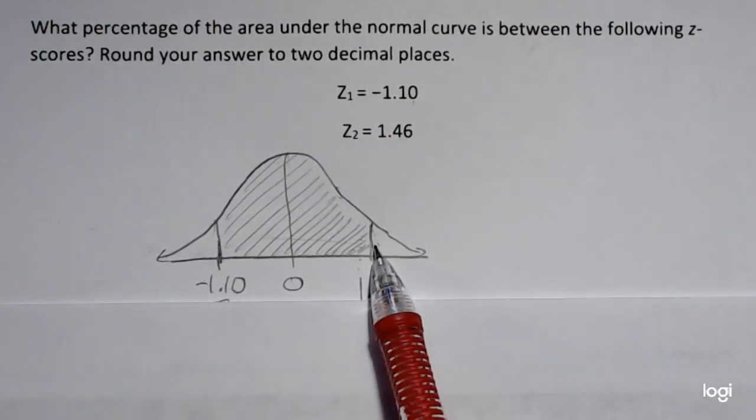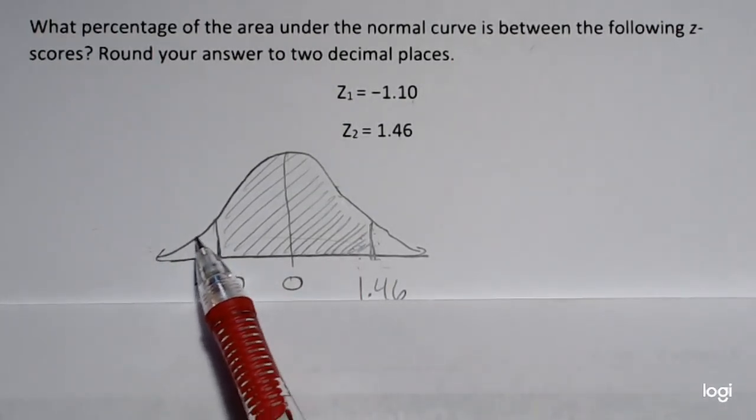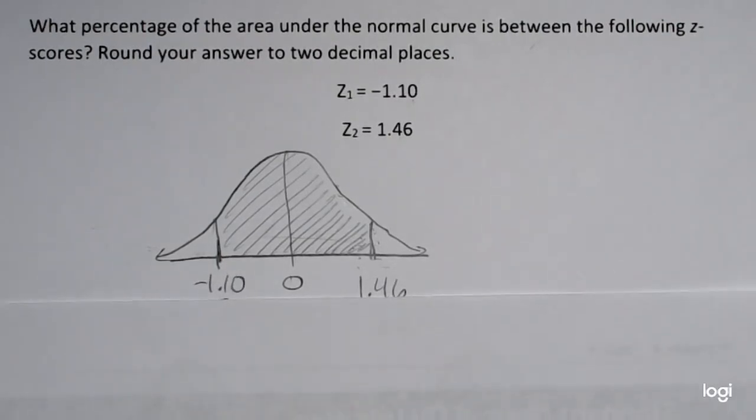So I'm going to have to deconstruct this bell curve into two bell curves. One with a larger area and then one with a smaller area shaded, and I'm going to subtract out the tail, this lower tail that I don't want.